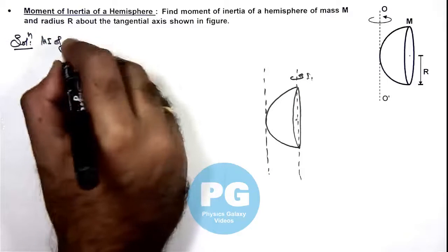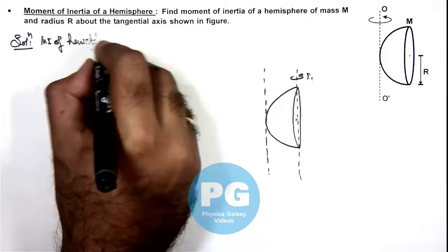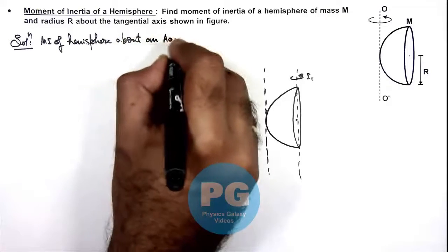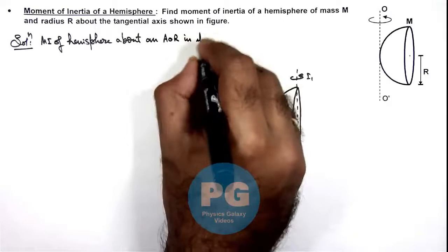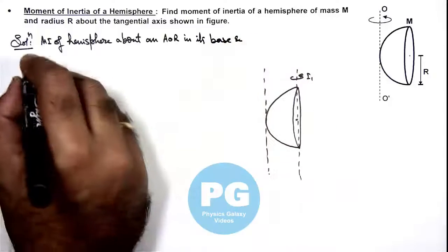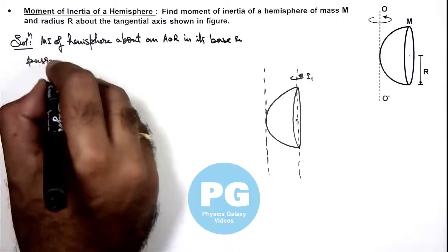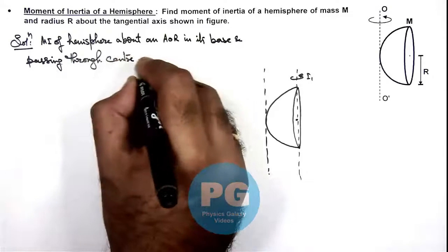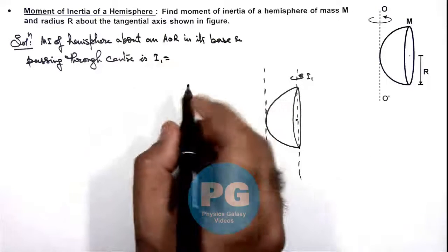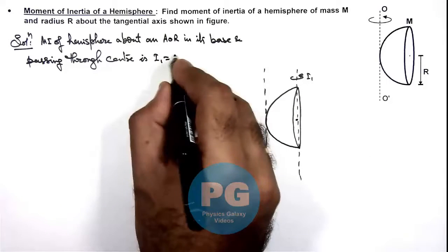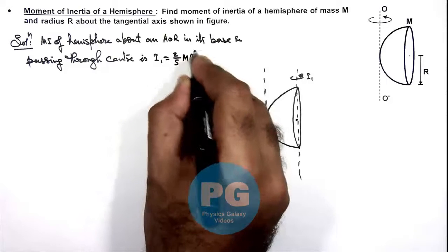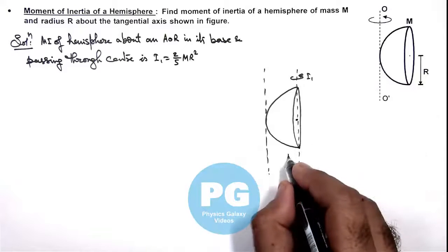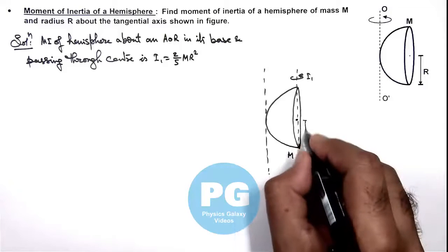The moment of inertia of the hemisphere about an axis of rotation in its base and passing through the center is I1. By symmetry, we can write it as (2/5)mr², which is the same result as that of a complete sphere, since the mass of the hemisphere is given as m and its radius is given as r.